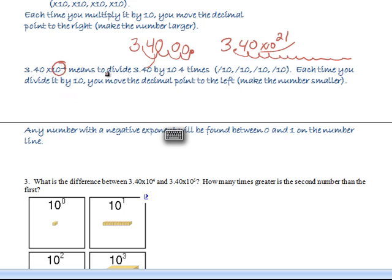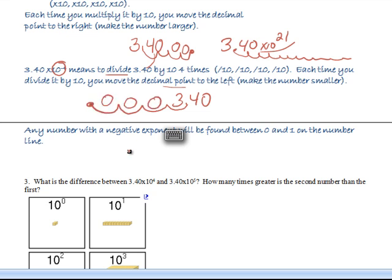A negative exponent means divide. So divide 3.40 by 10 four times. Every time you divide, the number gets smaller and you move the decimal point to the left. So starting with 3.40, you divide and divide and divide and divide, then put your new decimal place and fill in zeros to hold the place. That gives you a very small number.